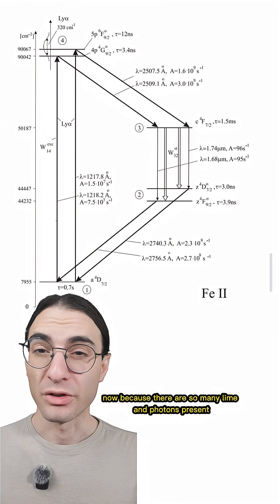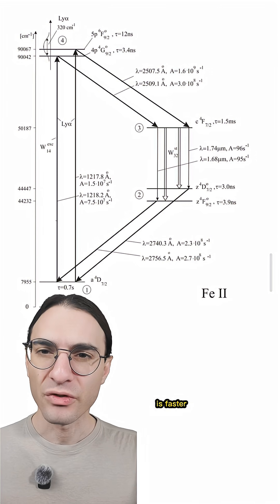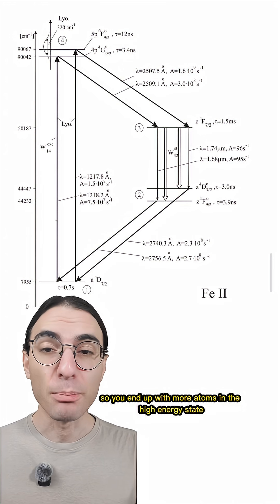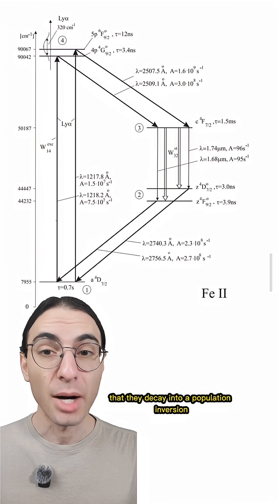Now, because there are so many Lyman photons present, the rate at which oxygen and iron atoms enter these metastable states is faster than the rate at which they decay out of them. So you end up with more atoms in the high energy state than in the lower energy state that they decay into, a population inversion.